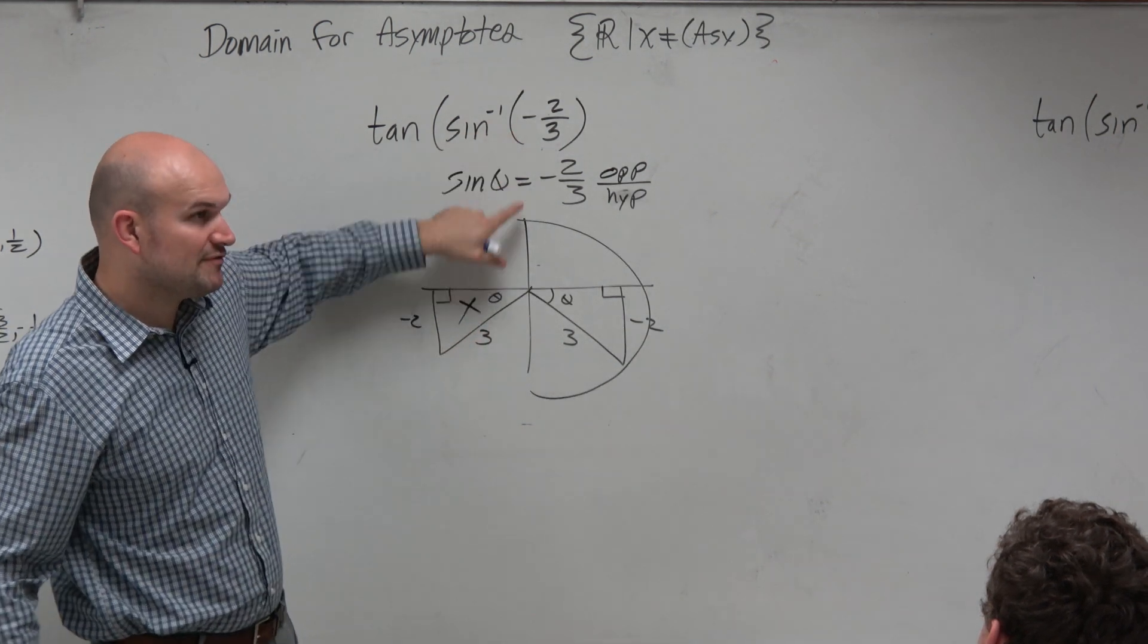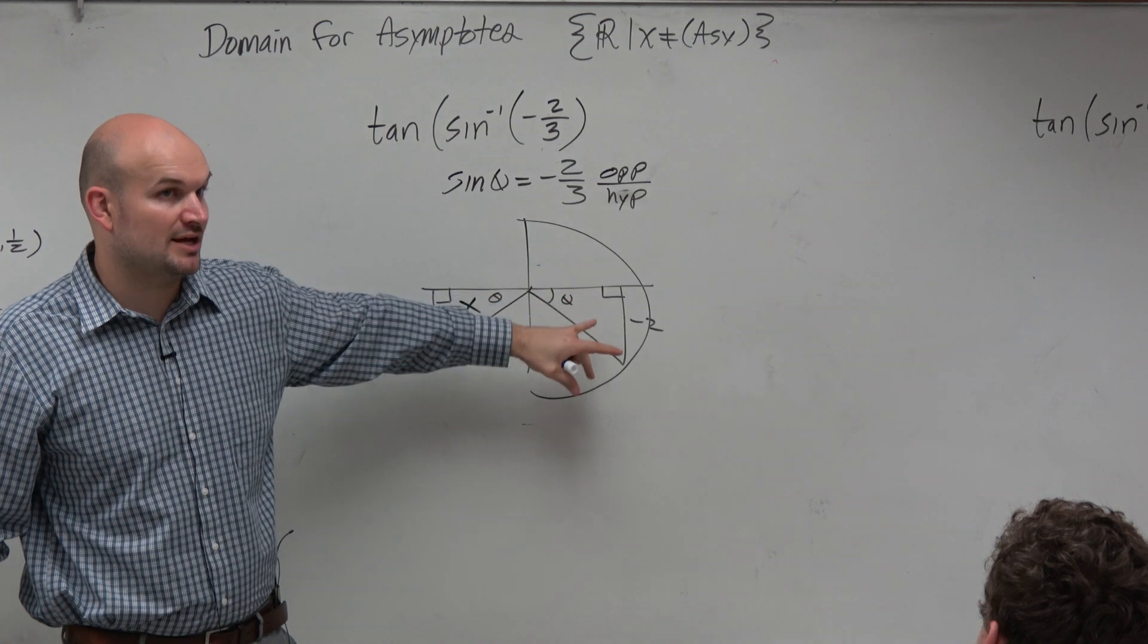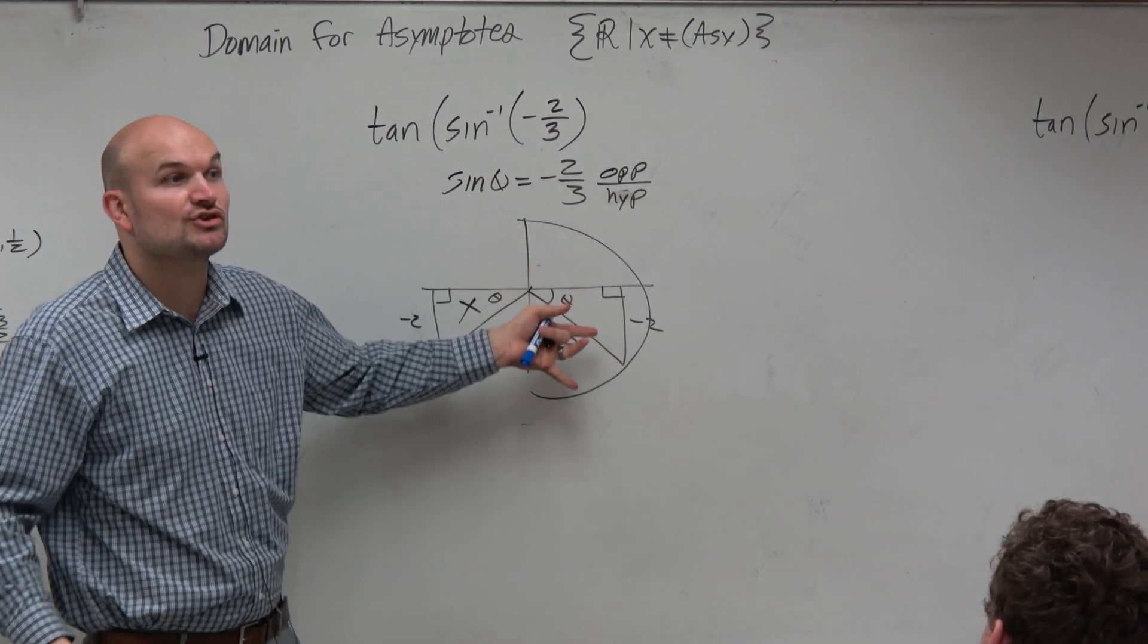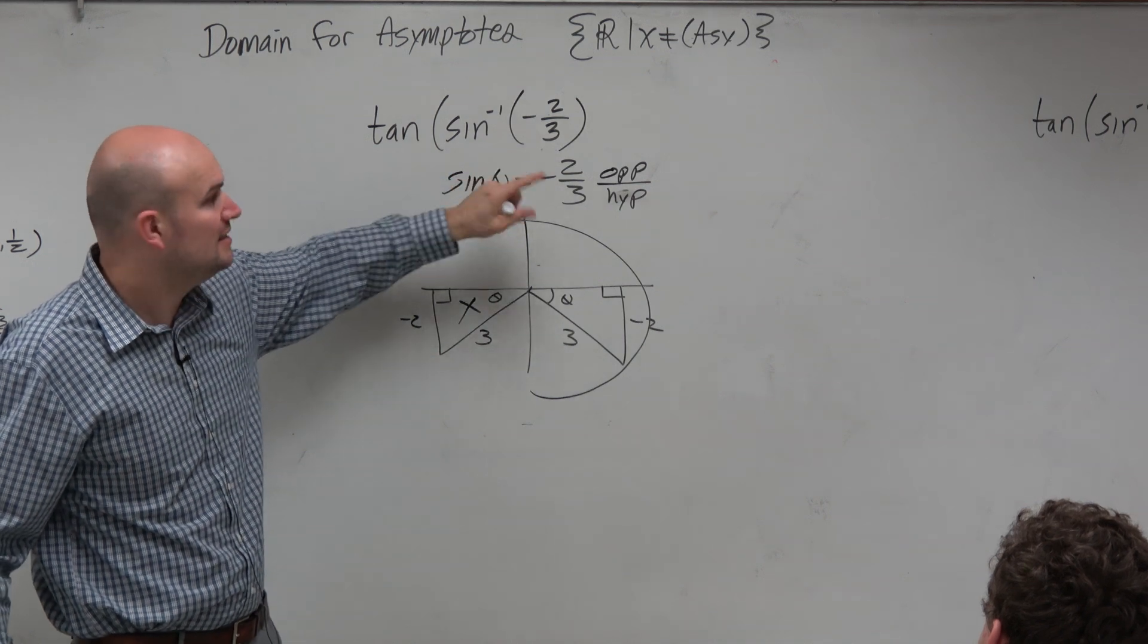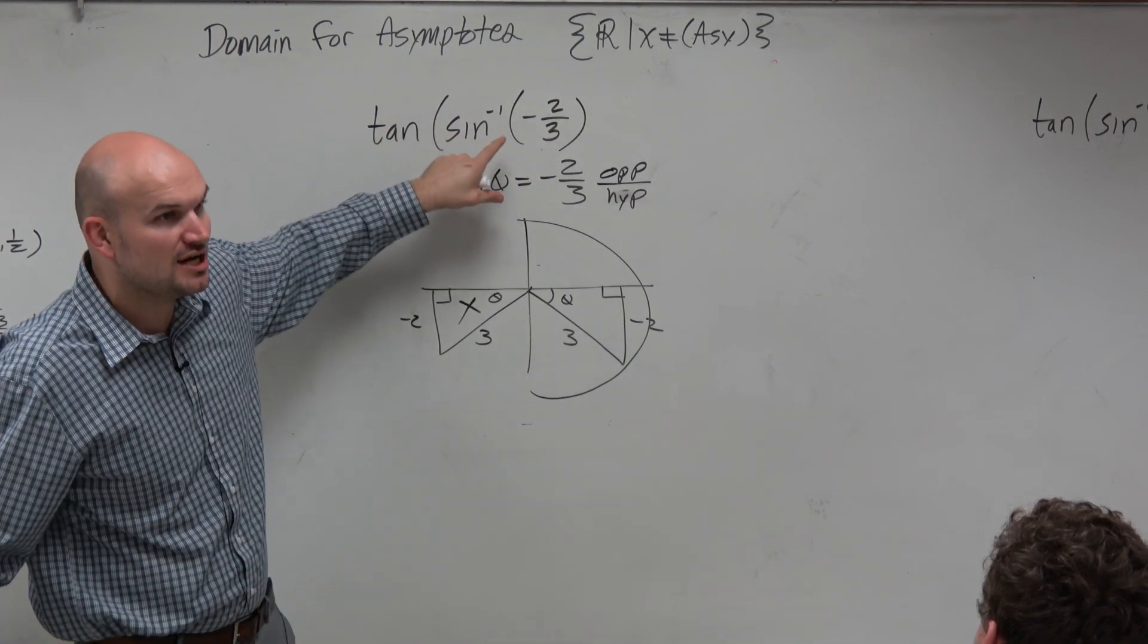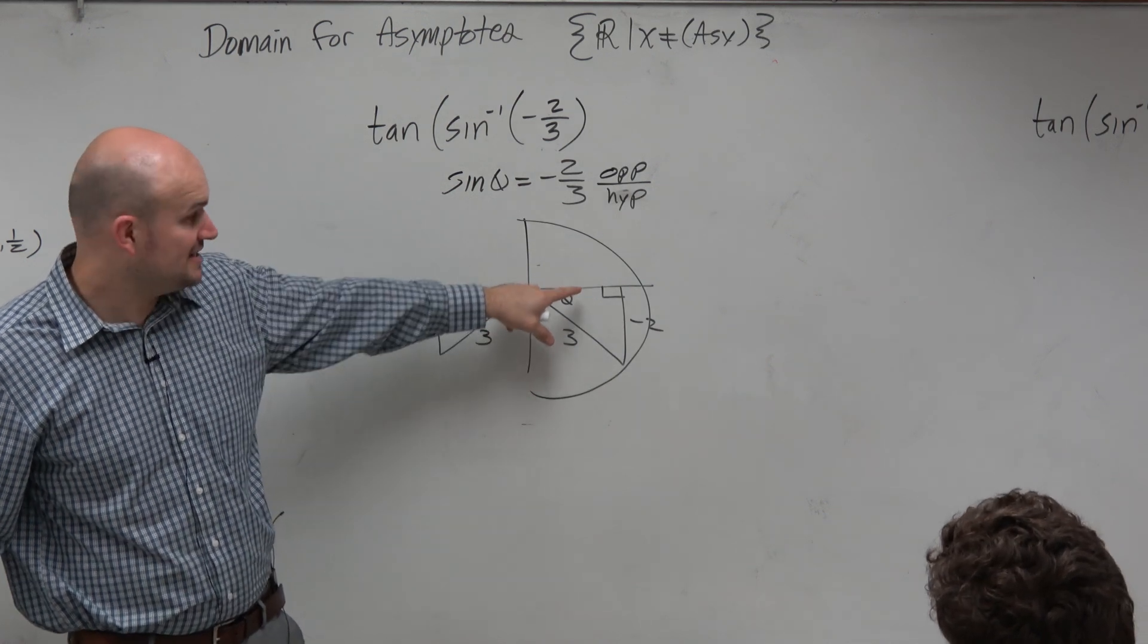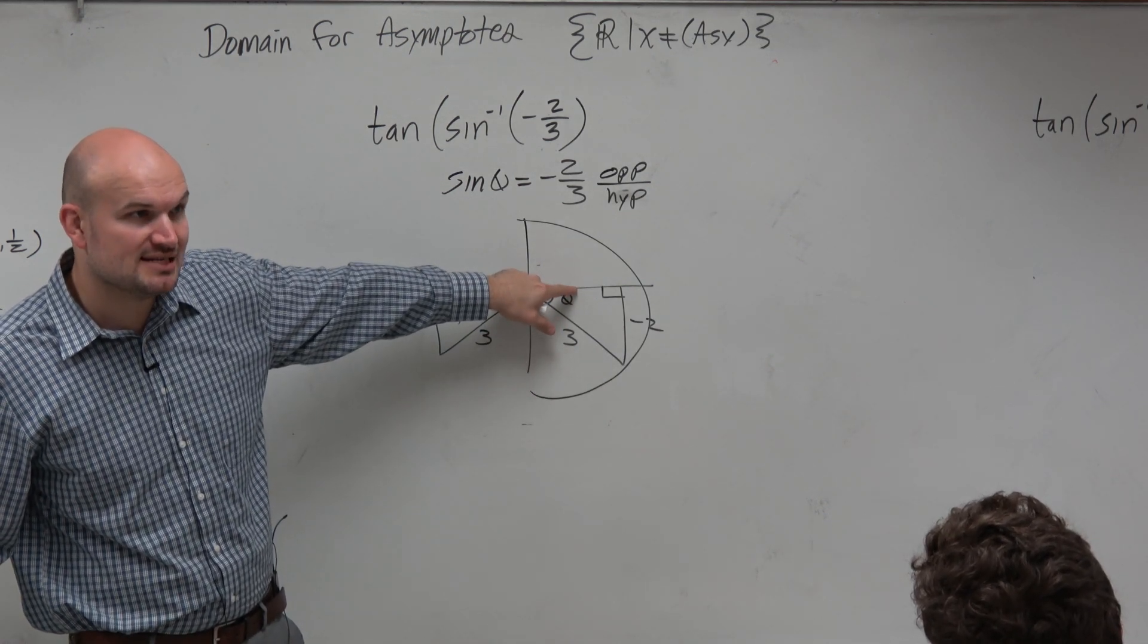So based on this information, I can construct a triangle. I can't find the value because I don't have a calculator. But I can construct a triangle that represents that. Can I now take the tangent of that representation? Sure. I just got to figure out what the adjacent side is, right?